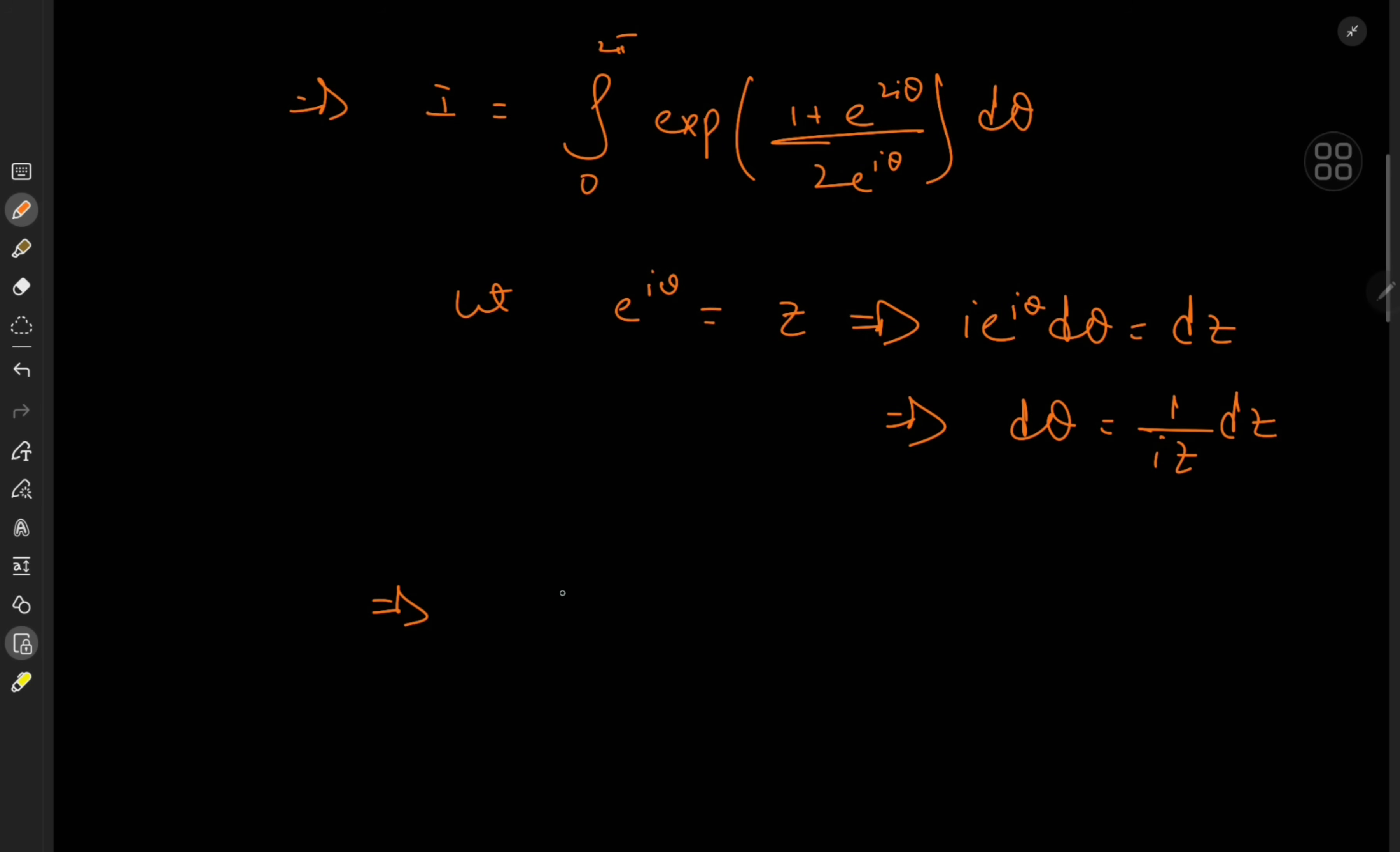So this implies that the target integral is now the integral from where to where, or over what exactly? Because we have e^(iθ) equal to z, and θ here is bound between 2π and 0. So that means z here is traversing the unit circle. So we're integrating over the unit circle centered at the origin.